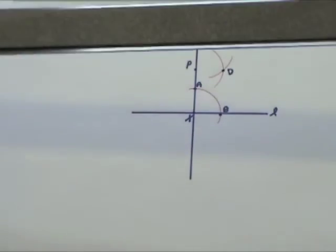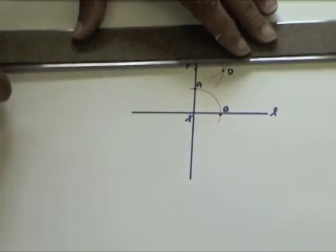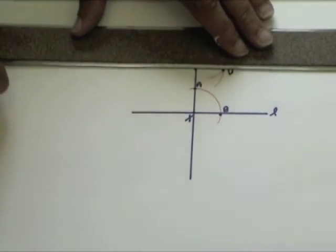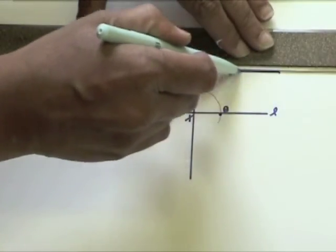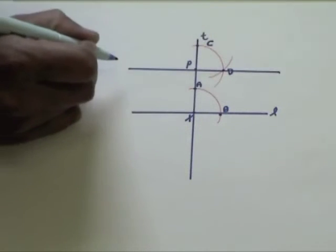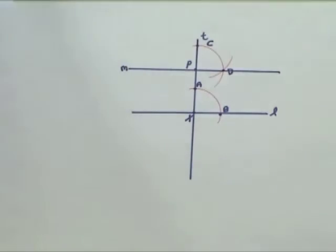Draw line M passing through P and D. Line M is parallel to line L.